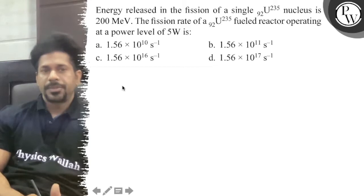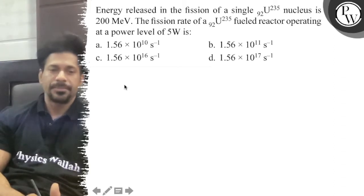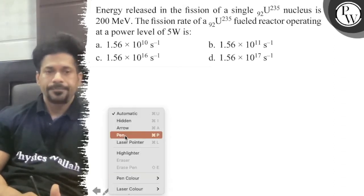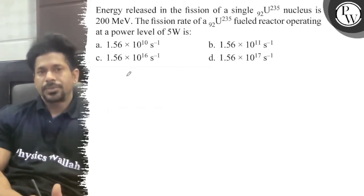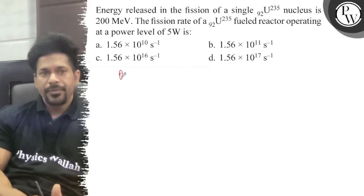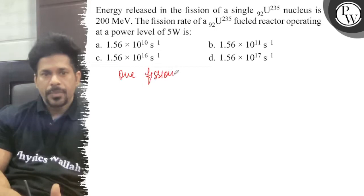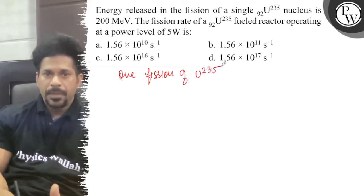Option A: 1.56 times 10 to the power 10, B: 10 to the power 11, C: 10 to the power 16, and D: 10 to the power 17 per second. So if you can see the question, we know that one fission of U-235 gives